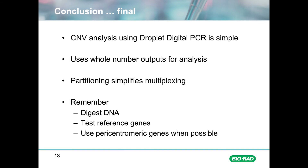Copy number variation analysis is simple and straightforward. Droplet Digital PCR offers a robust, accurate method for quantifying both the target of interest and reference genes within the same well. Remember that to get the most out of your experiment, it's a good idea to digest your template, test for the stability of your reference genes, and when possible, use pericentromeric reference genes.